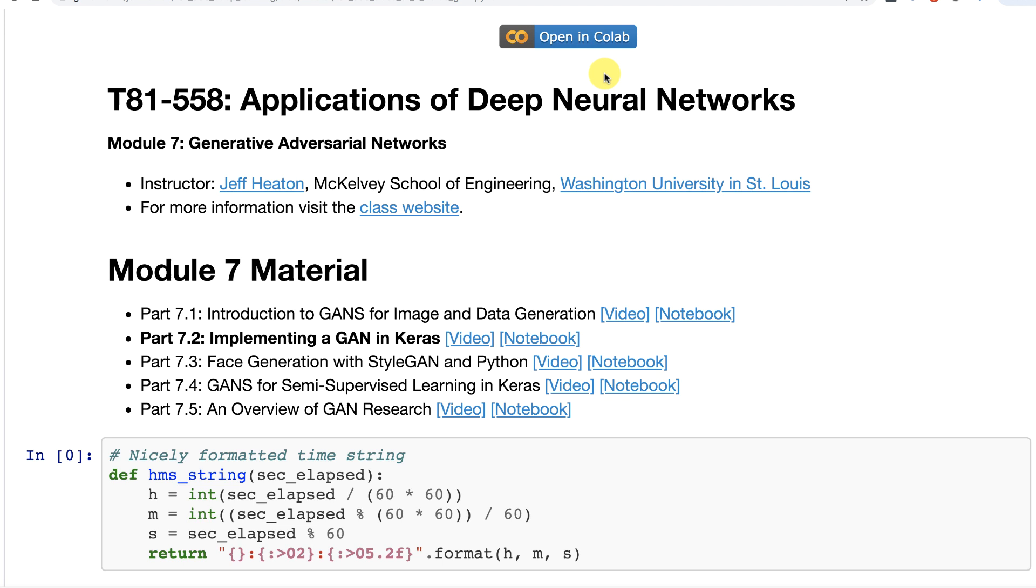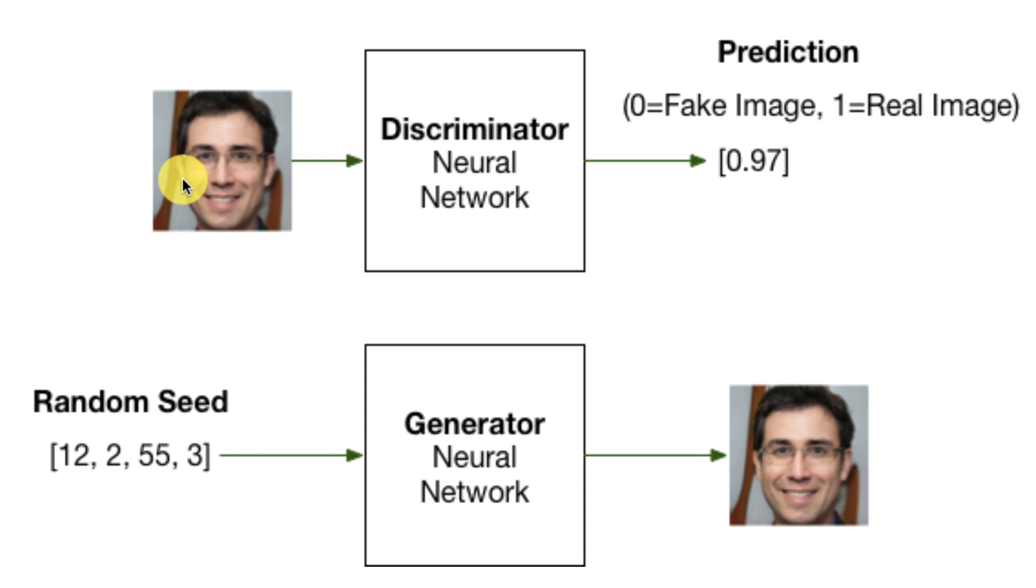Before we get into the code, let's just conceptually look at what we're trying to do. So for a GAN, you have two neural networks and you're training each of these two neural networks completely differently.